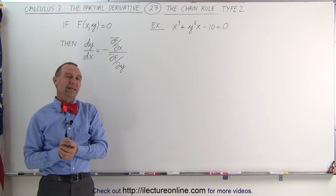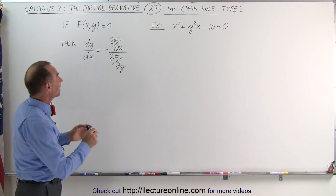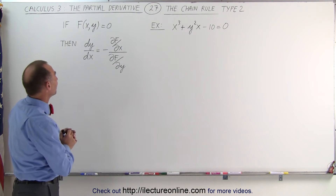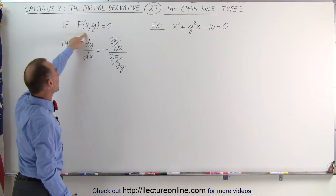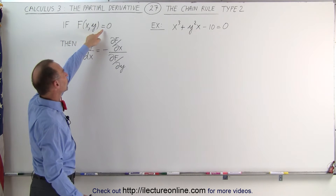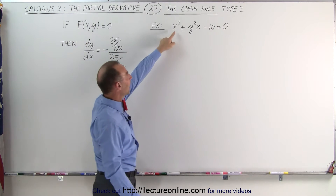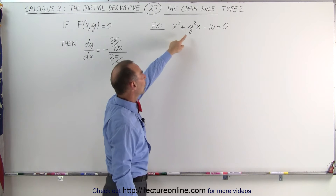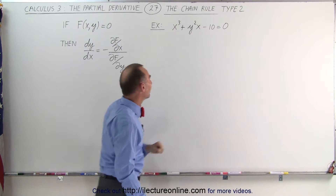Welcome to ElectroOnline. Here we're going to look at a different kind of chain rule, in the case that the function of two variables can be set equal to zero. Here's an example: x cubed plus y squared x minus 10 equals zero.